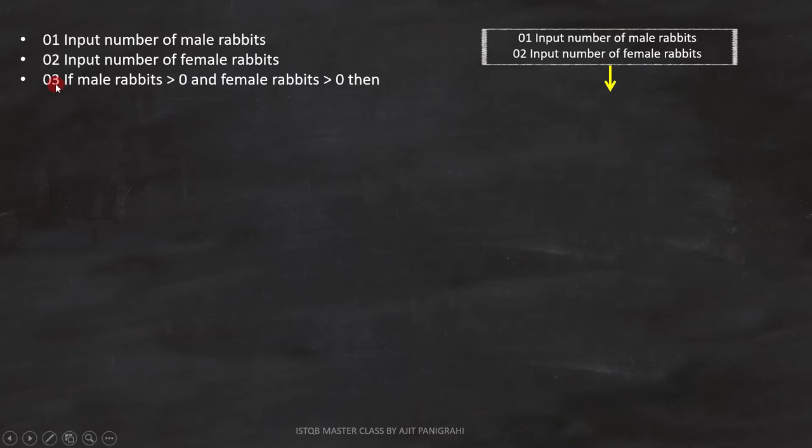Line 3 is, if male rabbits are more than 0 and female rabbits are more than 0. This is a condition, so we can represent it like this.